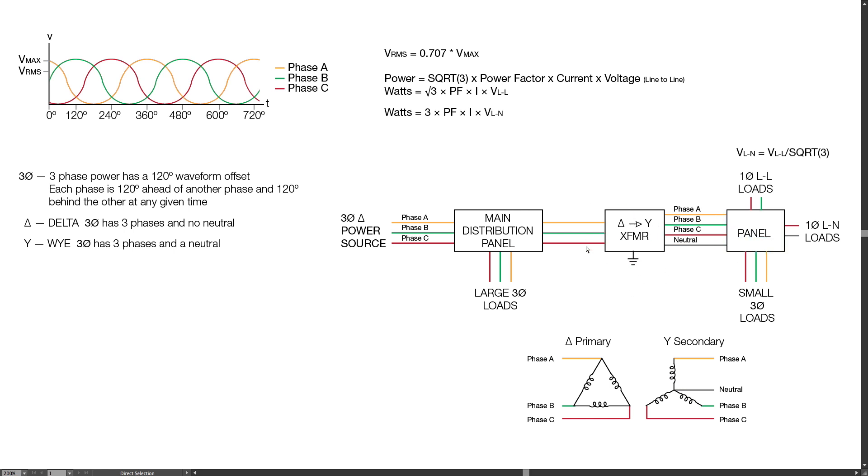Taking a closer look at this transformer, we have three phases coming in to the primary side, which is in a delta configuration, and then we have the secondary side in a Y configuration where we have the three phases coming out and a neutral.